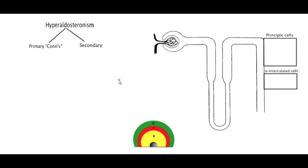Hey guys, today we're going to talk about hyperaldosteronism, which we can divide into the primary, also known as Conn's syndrome, or secondary.